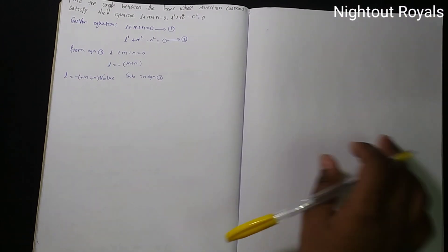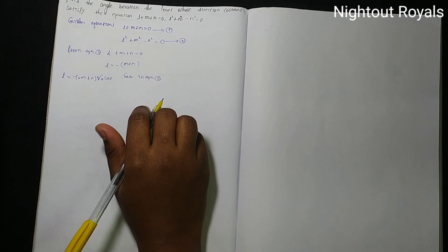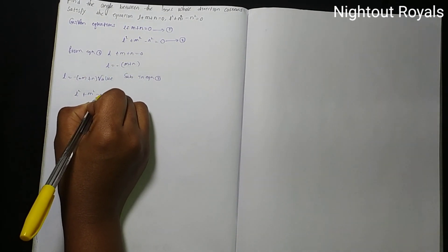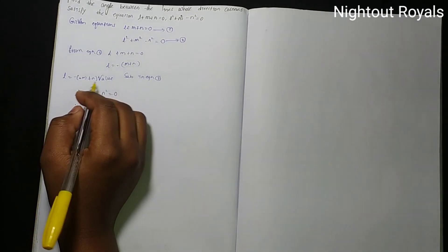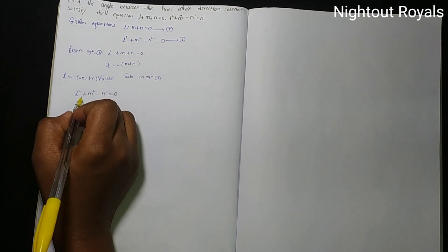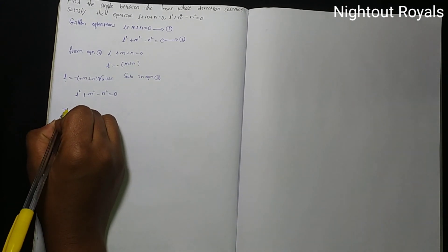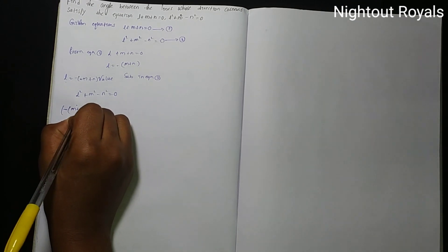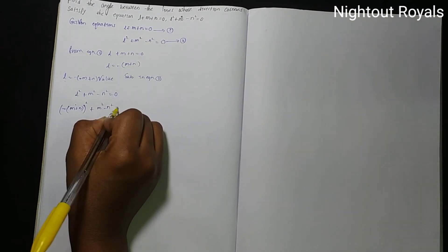Substituting into equation 2: L square plus M square minus N square equal to 0. Replacing L with minus M plus N, we get minus M plus N whole square plus M square minus N square equal to 0.